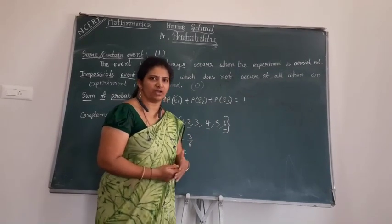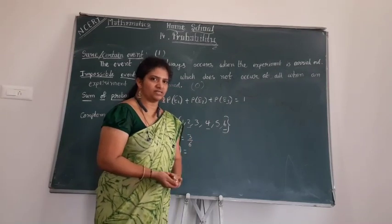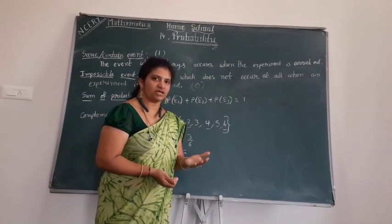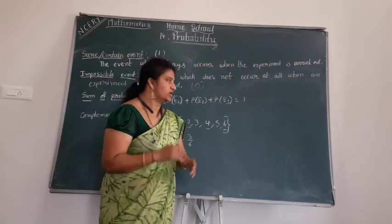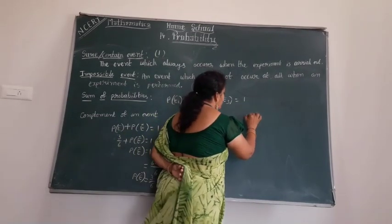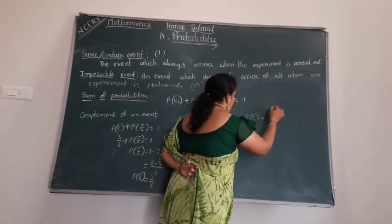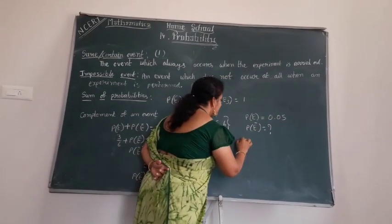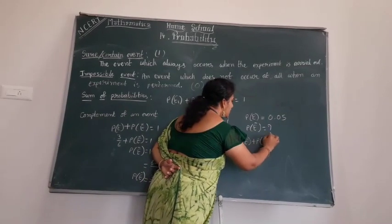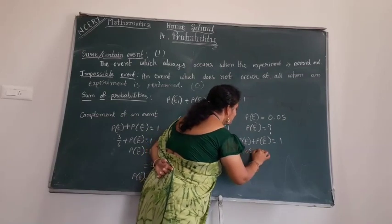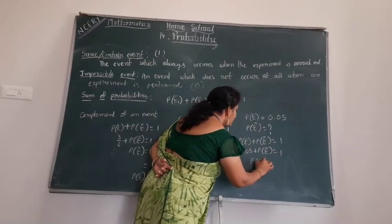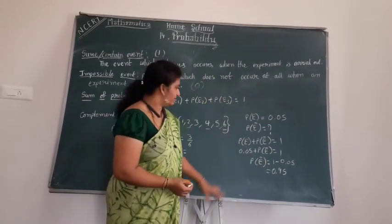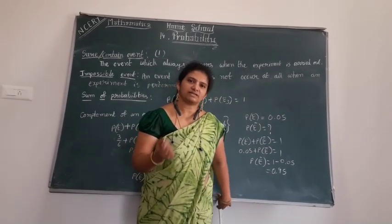One more example for complement: suppose there is a 30% chance of raining. Then the probability of not raining P(E̅) = 70%. Similarly, if P(E) = 0.05, then P(E̅) = 1 − 0.05 = 0.95. With this, I am going to end your introduction class. The next class, we are going to start the exercise.